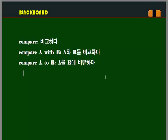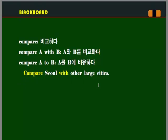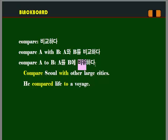다음에는 'compare A to B'입니다. 그는 인생을 항해에 비교했다. 'Compare A to B'를 쓰게 되면 비유하다의 의미가 됩니다. 그런데 조심하세요. 'Compare A to B'는 비유하다의 경우에도 쓰일 수 있습니다. 그러나 'with'를 쓰게 되면 비교하다 이런 의미로서만 쓸 수 있습니다. 다시 한번 확인해 주세요. 'with'를 쓰면 비교, 'to'를 쓰면 비유 혹은 비교, 양자 다 가능하다는 거 다시 한번 확인해 주시기 바랍니다.